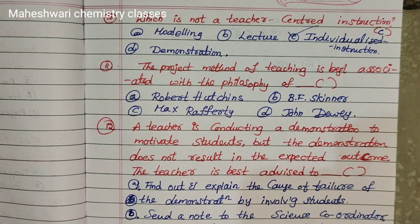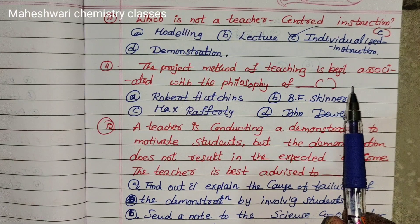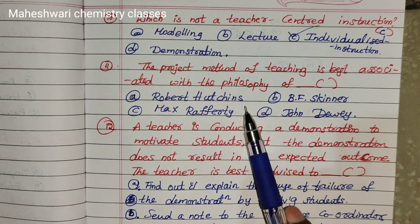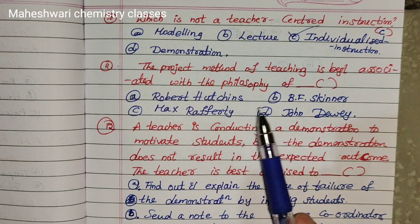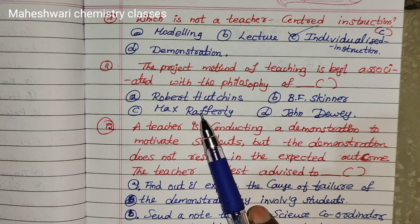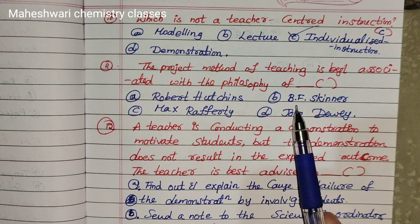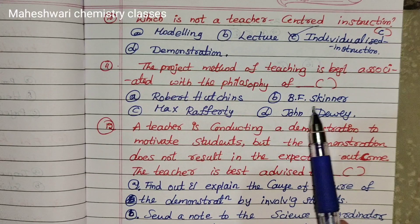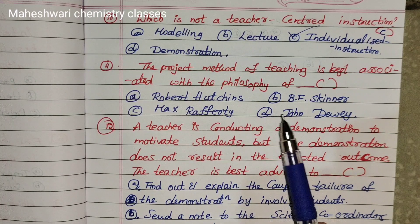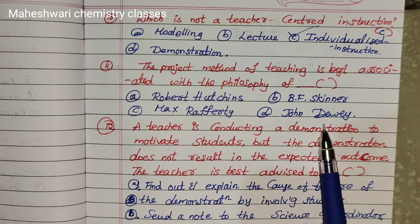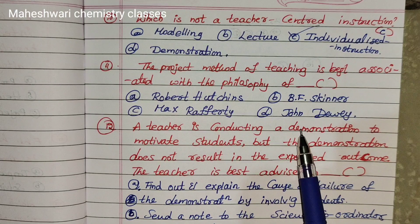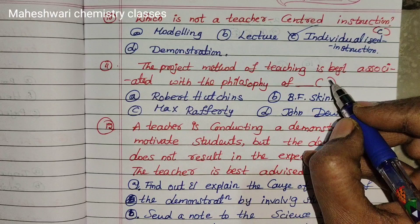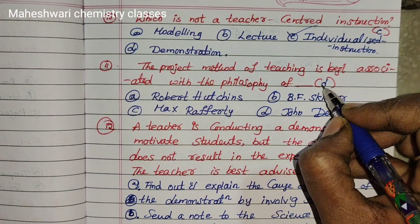Eleventh question: The project method of teaching is best associated with the philosophy of which person? Options are Robert Hutchins, B.F. Skinner, Max Rafferty, John Dewey. The answer is John Dewey. Eleventh one is option D.